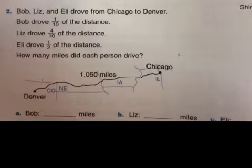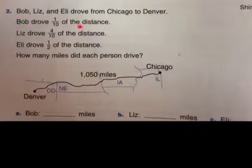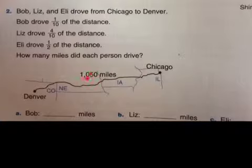Number 2: Bob, Liz, and Eli drove from Chicago to Denver — 1,050 miles. Bob drove one-tenth. What is one-tenth of this? If you're thinking one-hundred-five, you are correct. There it is — one-hundred-five.